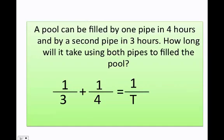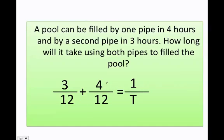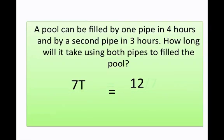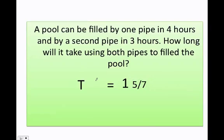I set it up the same way as before and need to add one-third plus one-fourth. Anytime I add fractions, I need the same denominator. I multiply the first fraction by four over four and the second by three over three. Four times one is four, four times three is twelve; one times three is three, four times three is twelve. I get three over twelve plus four over twelve. Same denominator — keep it and add the tops. That gives seven over twelve equals one over t. Cross-multiplying gives seven times t equals twelve, so t equals twelve over seven. Converting to a mixed number, I get one and five-sevenths hours to fill the pool using both pipes.